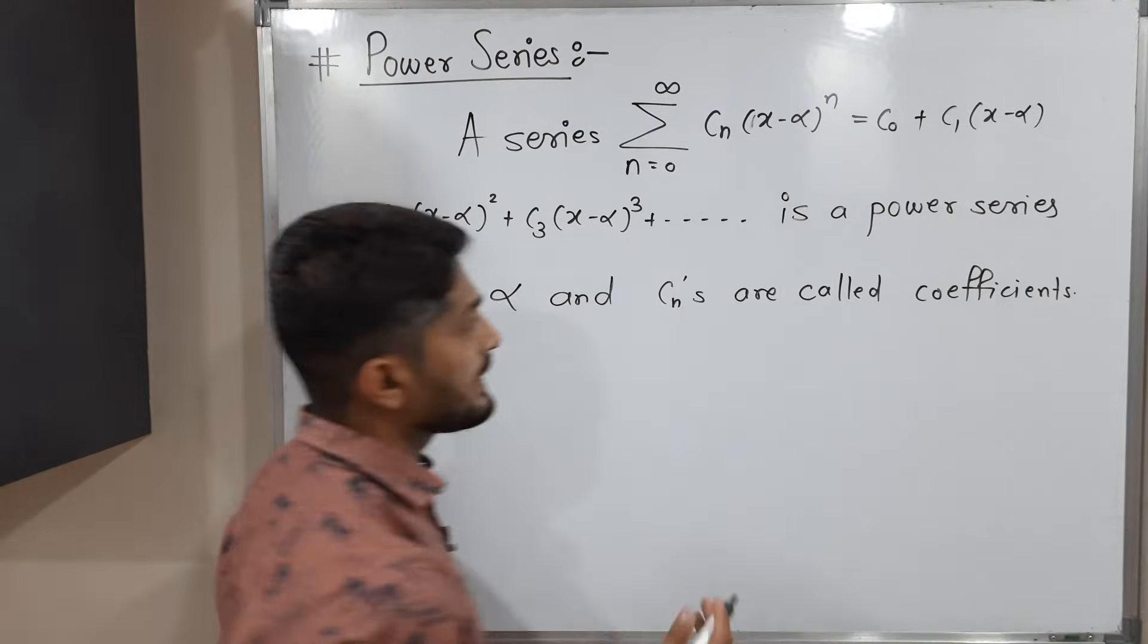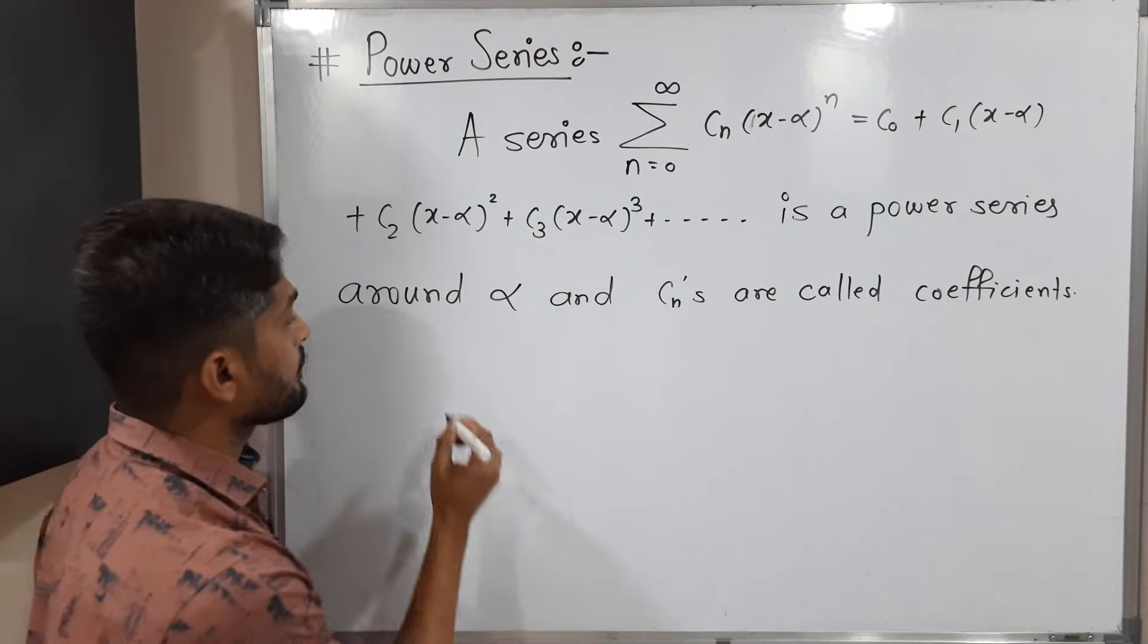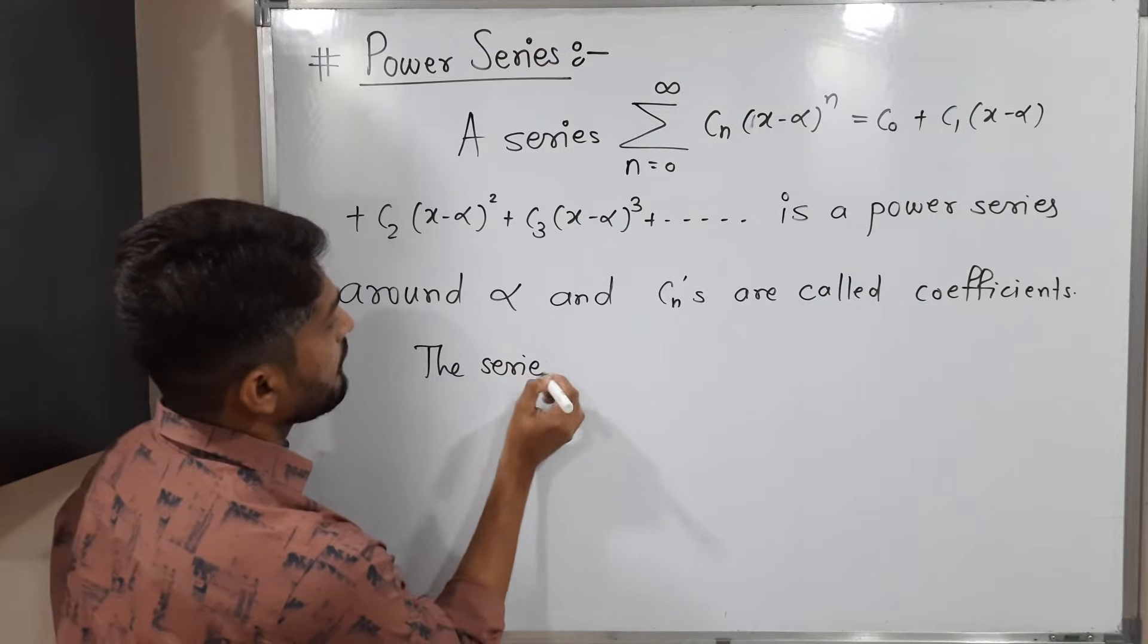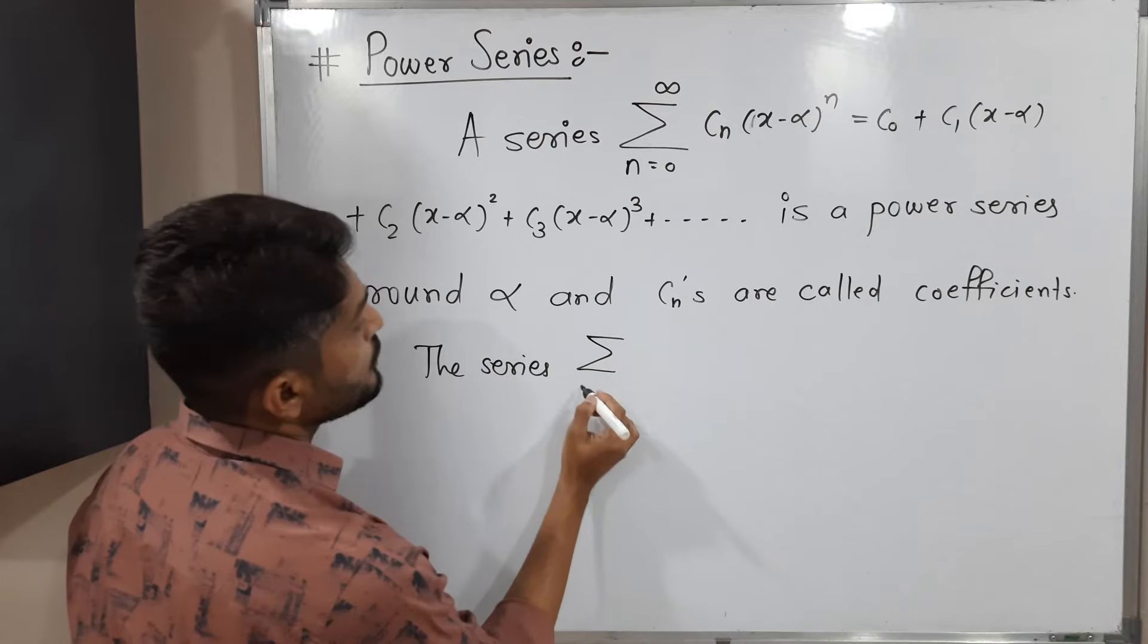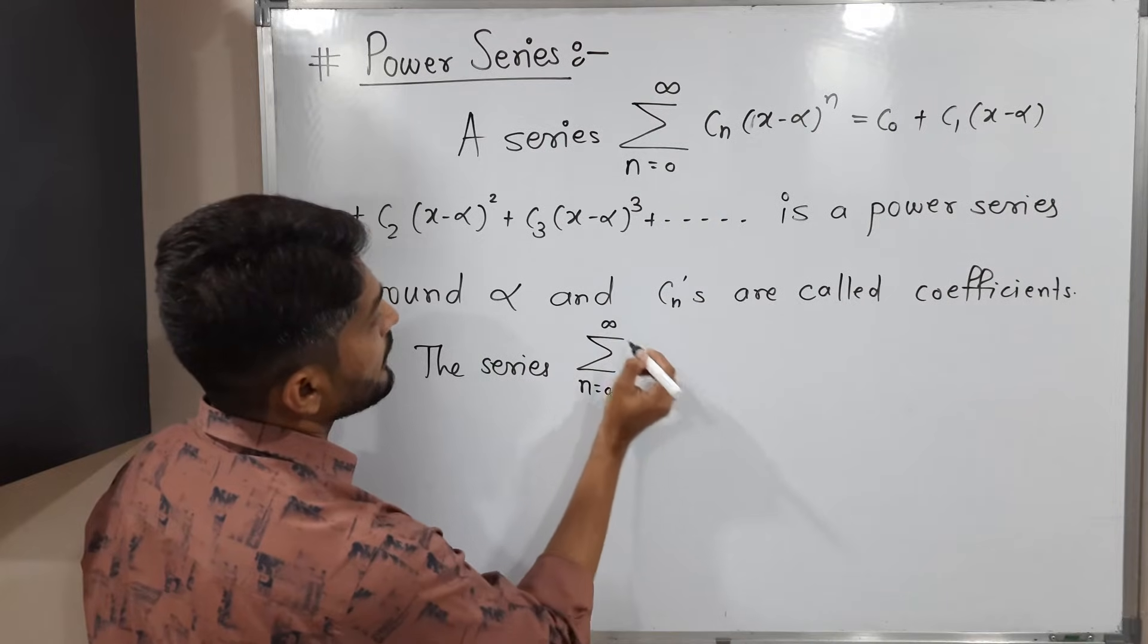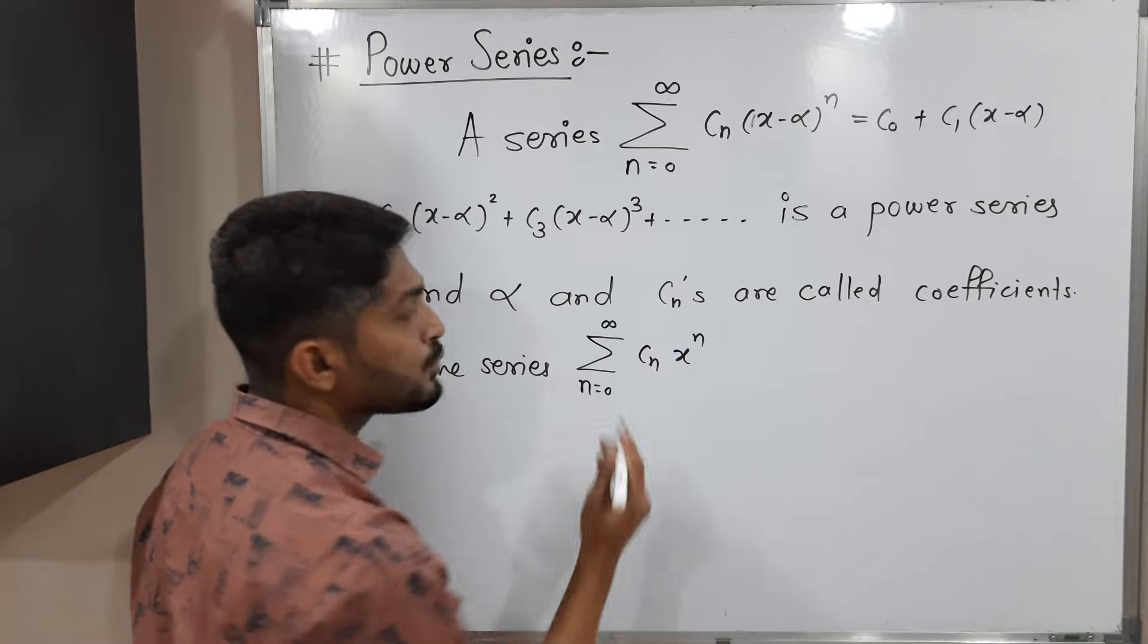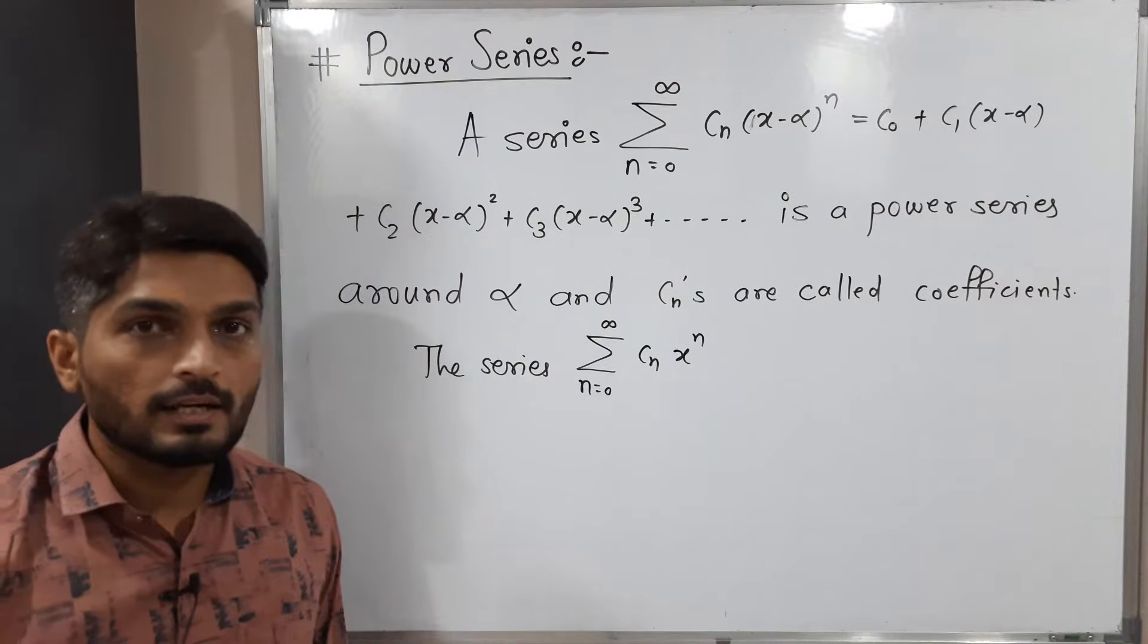If our alpha is 0, let's see what we have. If alpha is 0, that series will look like this: n running from 0 to infinity, cn times x raised to n. So this is called a power series around 0.